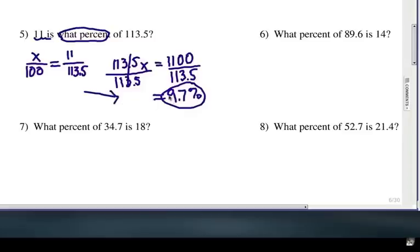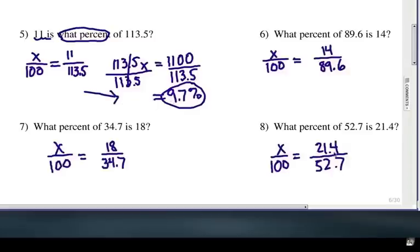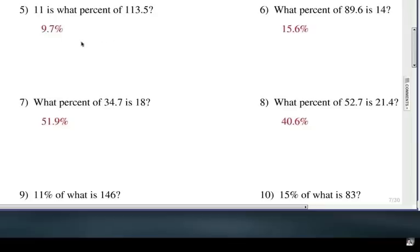All right. Keep trying all the rest. Here are the rest of the problems and the proportions that we can get from them. And these are all missing percent. So that's why we all have x over 100 here. And you're going to cross multiply. And let's go ahead and check your answer. 9.7%, 15.6%, 51.9%, and 40.6%. Those are rounded to the nearest tenth of a percent. Now I have one more set of problems for you to try.